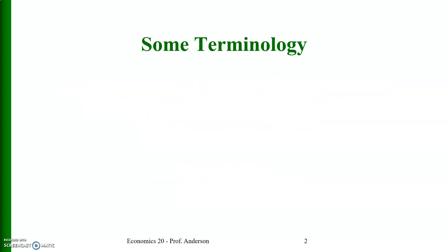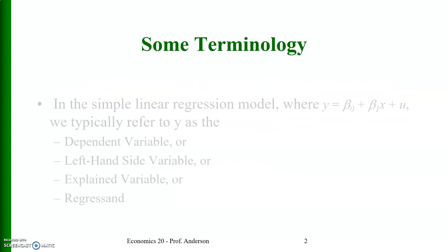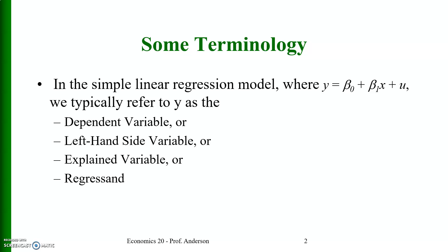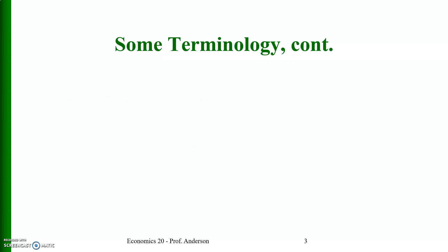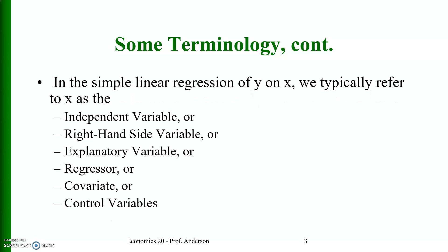Let me start with some terminology. In the simple linear regression model where y_i is equal to beta naught plus beta_1 x_i plus u_i, we typically refer to y as the dependent variable. It is also known as the left-hand side variable, explained variable, or regressand.